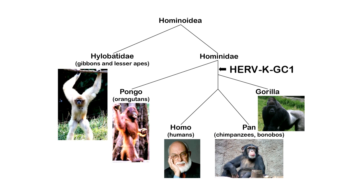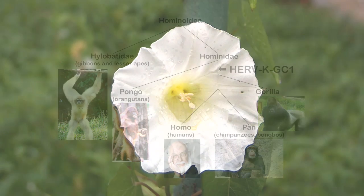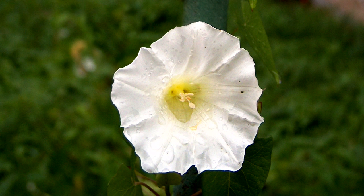This is based on a complete ignorance of genetics and how evolution works. Genes have what are known as alleles. For example, a flower might have only a single gene for color, but many alleles. This is the reason why humans have different colors of eyes, hair, skin tone, and many other features.